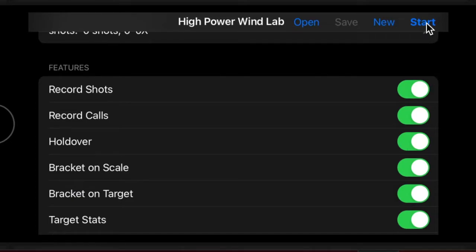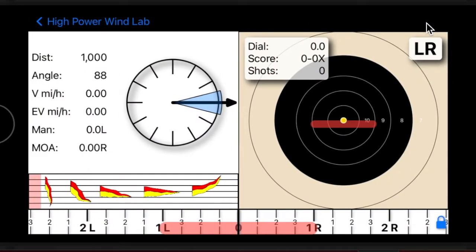When the holdover feature is enabled, a yellow dot appears on the target. This dot represents the aim point needed to hit the center of the target for a given wind condition.